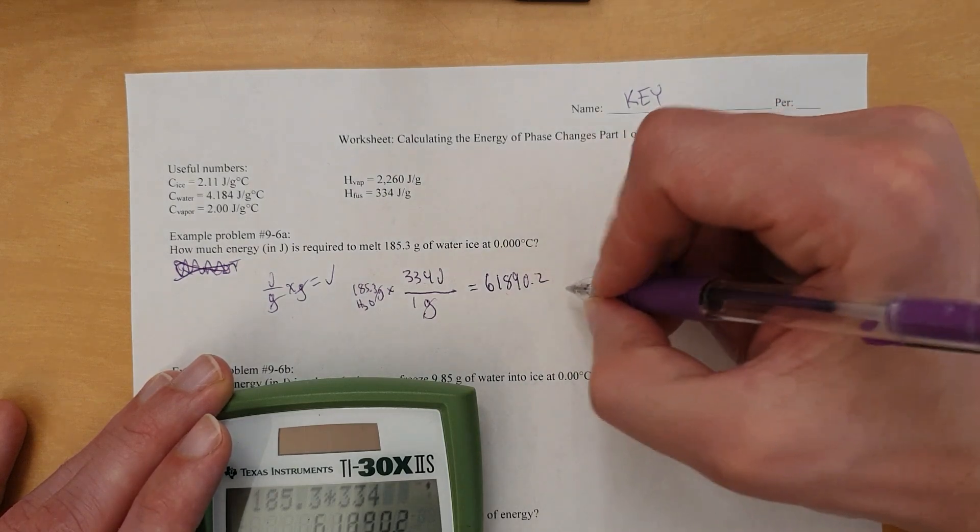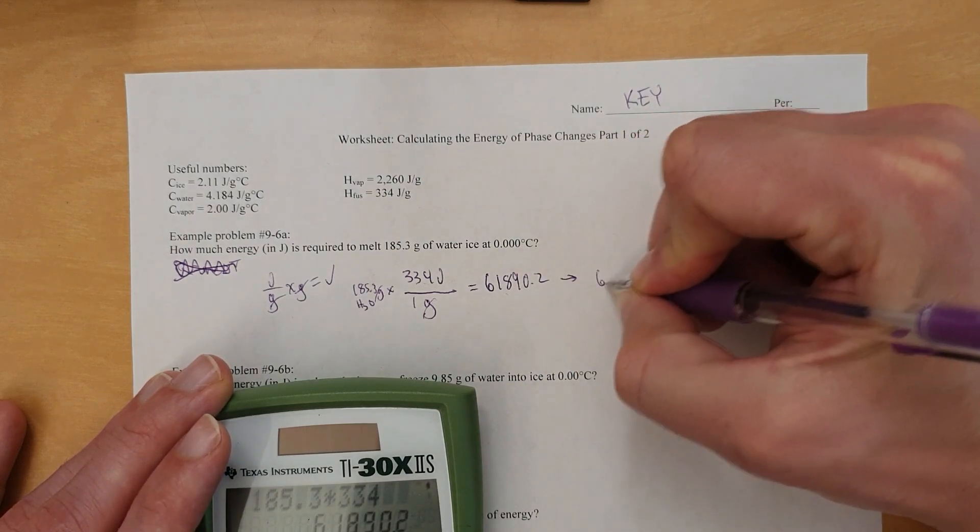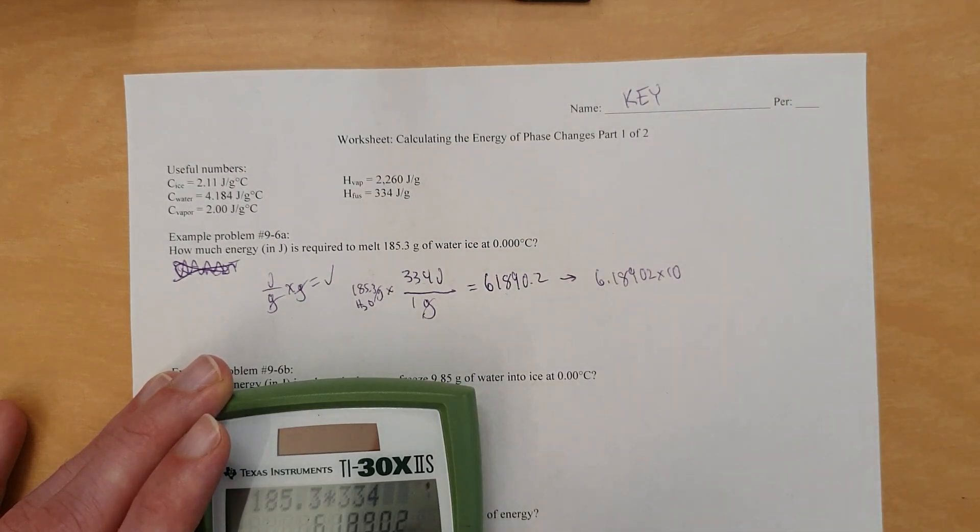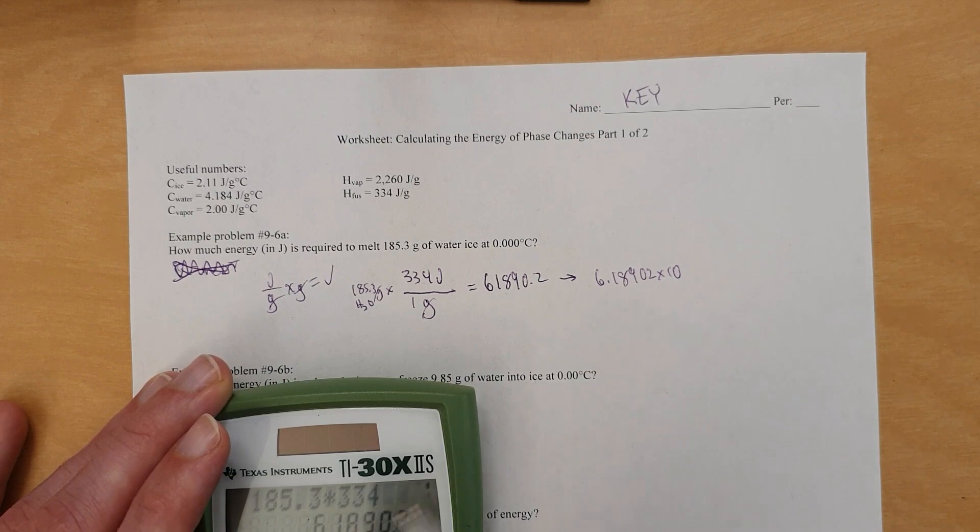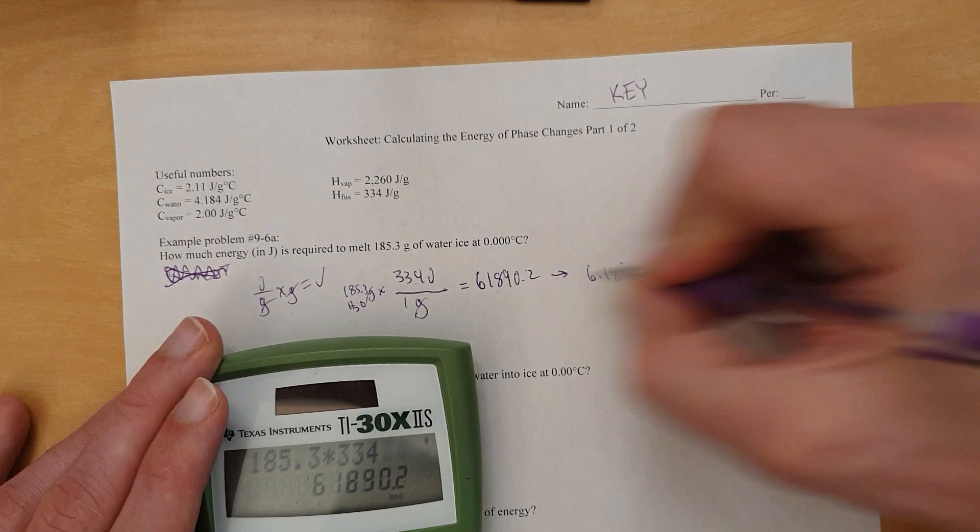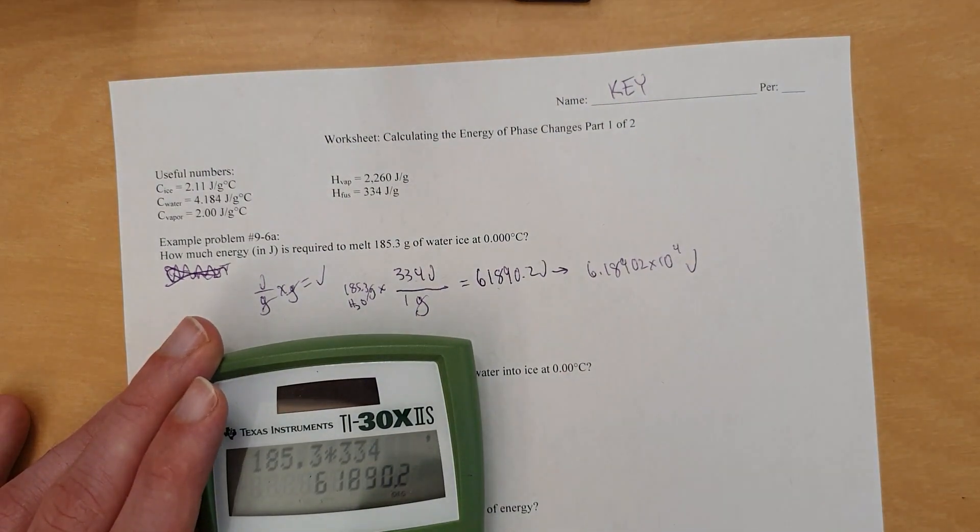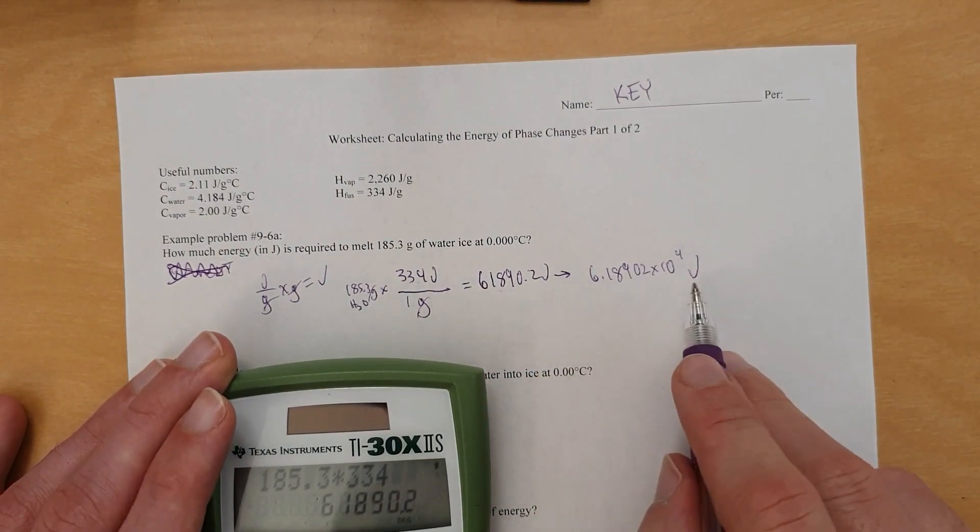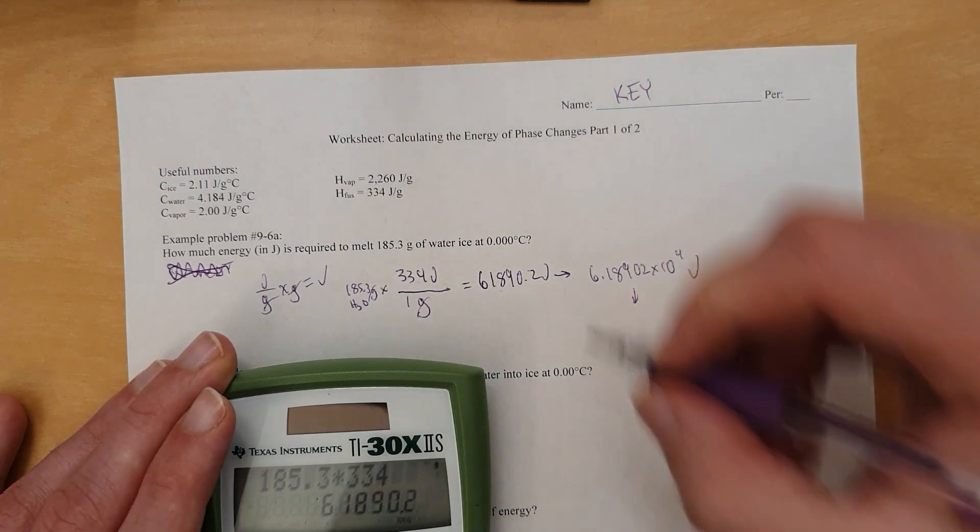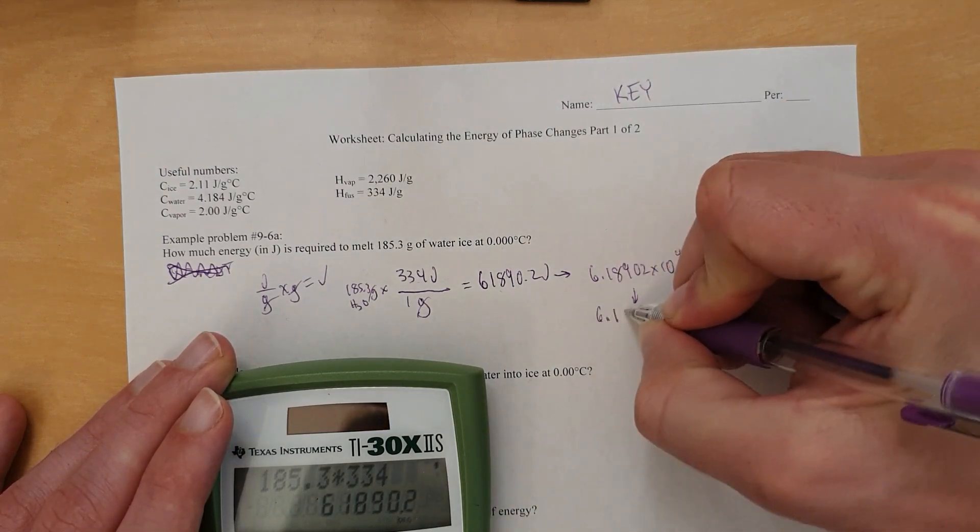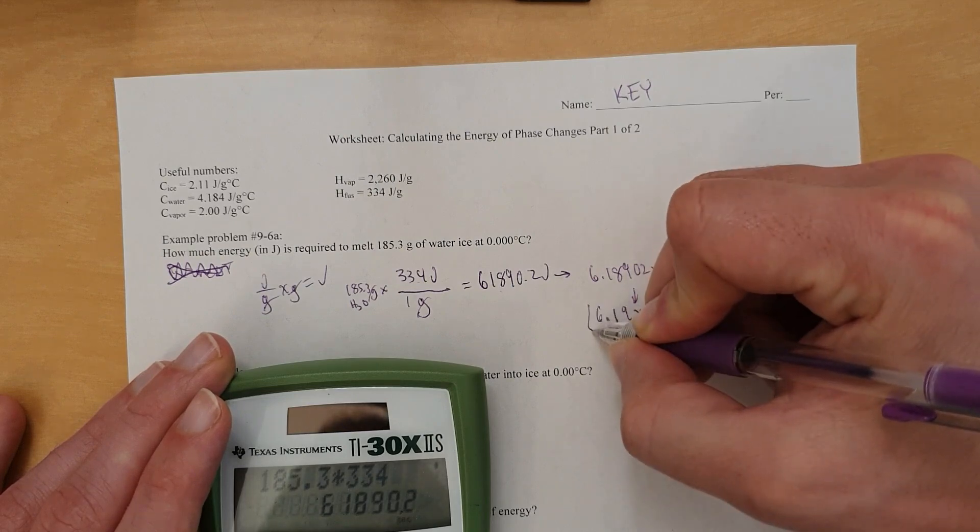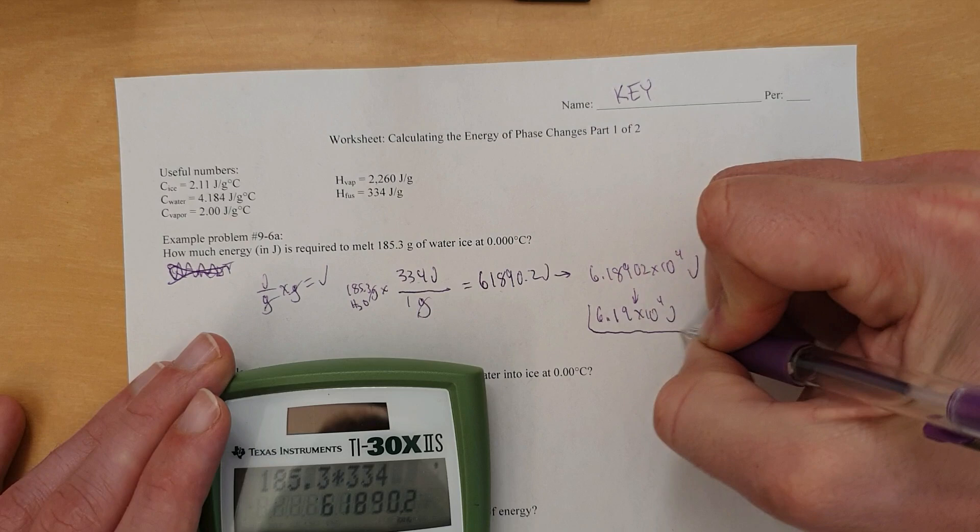So 185.3 times 334 equals that number. 61890.2. Now how are you going to round this? Don't worry about that because you didn't use it in your calculation. You just used the heat of fusion and the mass. Notice this is 4 sig figs, this is 3. So you're going to round this to 3 sig figs. Now this has to be scientific notation anyway. So this is 6.18902 times 10 to the power of 1, 2, 3, 4, times 10 to the 4th. So that's joules. Sorry, I forgot to have the joules there. Always have a unit on all your numbers. Never have a number without units. So let's round that now. And that is going to be 6.19 times 10 to the 4th joules required.